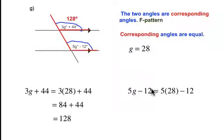And for 5g minus 12 when we sub in for g equals 28, 5 times 28 is 140. Subtract 12 is 128. So we find that 5g degrees minus 12 degrees would be 128 degrees. And note that these two angles are equal, which goes along with the fact that corresponding angles are equal.